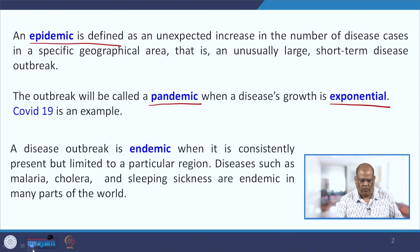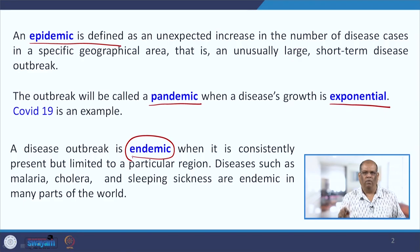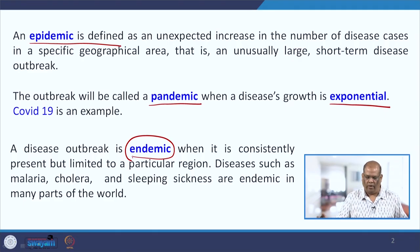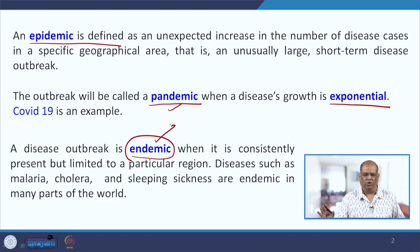There is another word we use: endemic. A disease is called endemic if it is consistently present but limited to a particular region. For example, malaria, cholera, and sleeping sickness are endemic diseases in many parts of the world. The difference between pandemic and endemic is that a pandemic grows exponentially, whereas an endemic is consistently present but limited to a particular region.